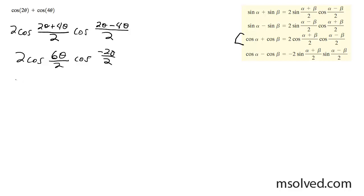And we get 2 cos 3 theta cos negative theta, and because cos is an even function, you can just get rid of this, so this ends up just being 2 cos 3 theta cos theta. That's it.